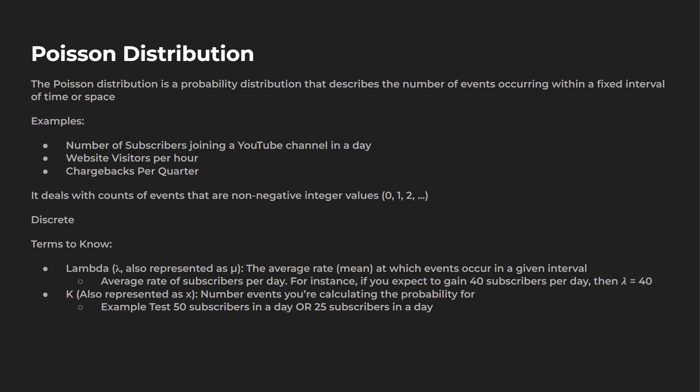Some examples include the number of subscribers joining a YouTube channel in a day, website visitors per hour, and chargebacks per quarter. It deals with events that are non-negative integer values — you can't have a negative amount of visitors to a website, you can't have a negative amount of chargebacks. Because of this integer value, this distribution is going to be discrete.